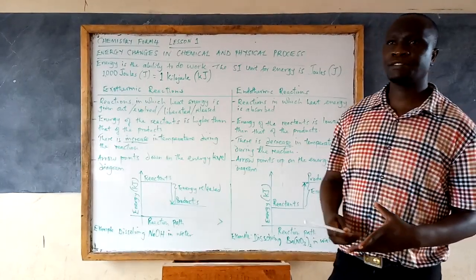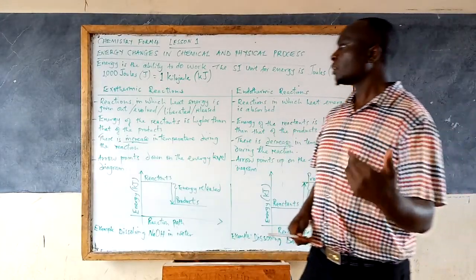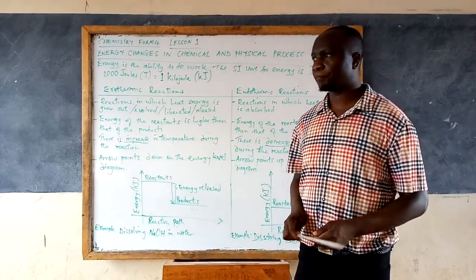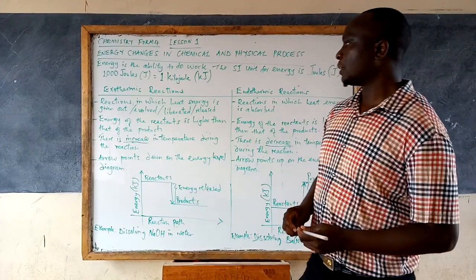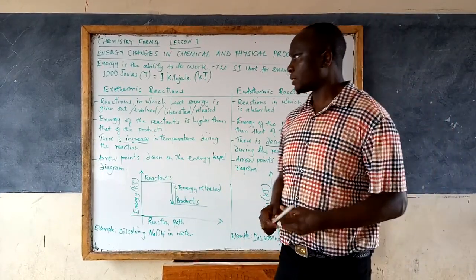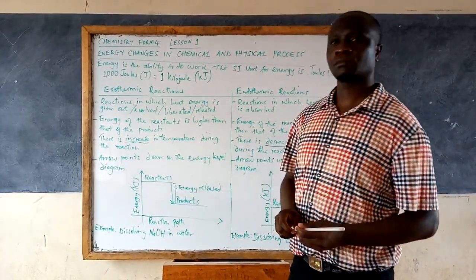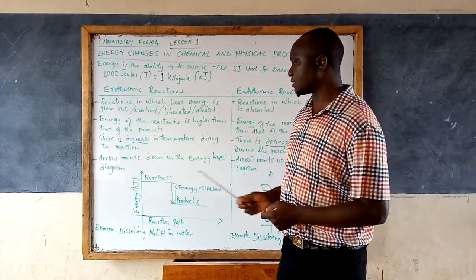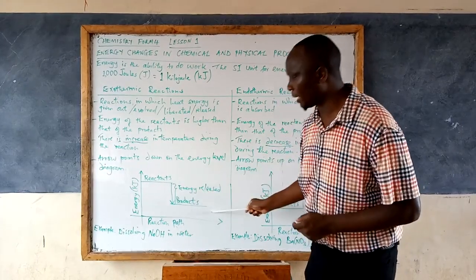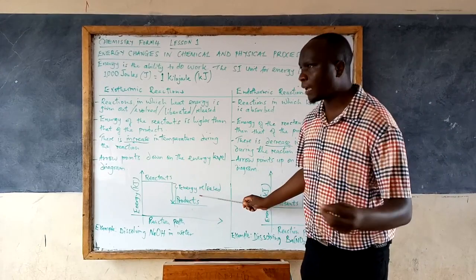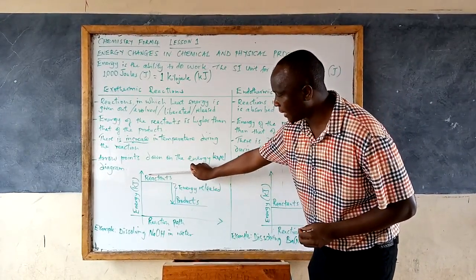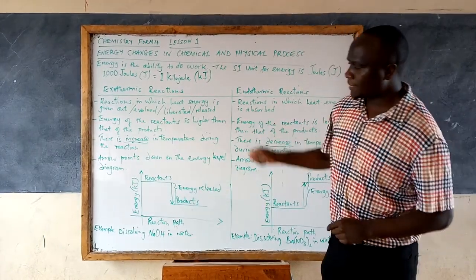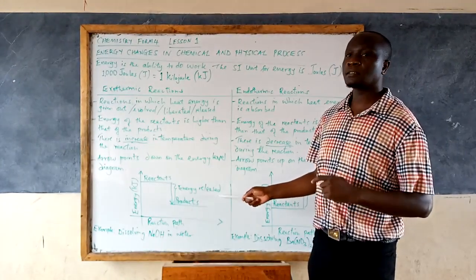In an endothermic reaction, the reactants take in the energy and use it to form products. There are some indicators you can look at to tell whether the reaction was endothermic or exothermic. One is looking at the heat content. For an exothermic reaction, the heat content of the reactants is usually higher than that of the products. This is best illustrated using an energy level diagram, where you can see the reactants are at a higher level and the products are at a lower level — confirming the reaction is exothermic.